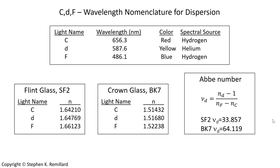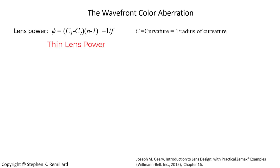These numbers can vary a little bit in catalogs, which is why we're going to calculate the aberration and then look at what Zemax gets. We need a working equation to calculate the axial color. Begin with lens power: the difference in curvature on either side of the lens times the index of refraction of the glass minus 1 for a lens in air. Lens power is just 1 divided by the focal length. C is the curvature — that is, 1 divided by the radius of curvature.